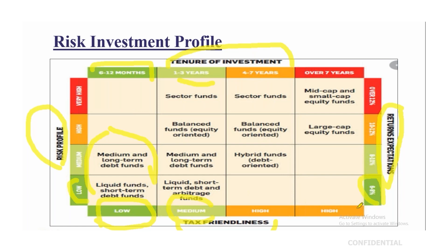For a four to seven year investment horizon, your returns will be higher — above eight percent — and the suitable funds are hybrid funds, balanced funds, and sector funds, though risk also increases. For a longer-term horizon you should always look at equity funds — large cap, mid cap, and small cap funds.